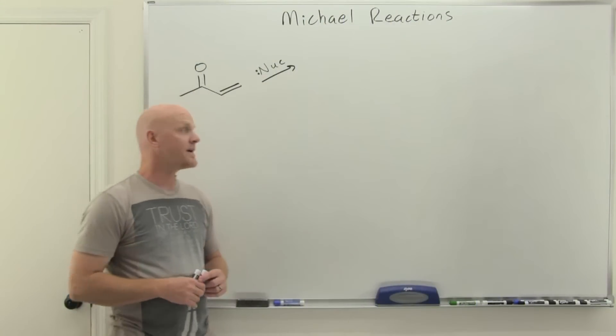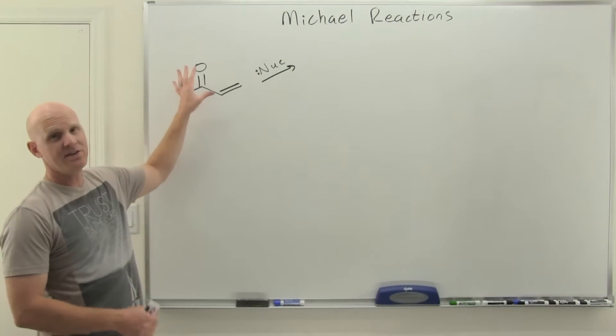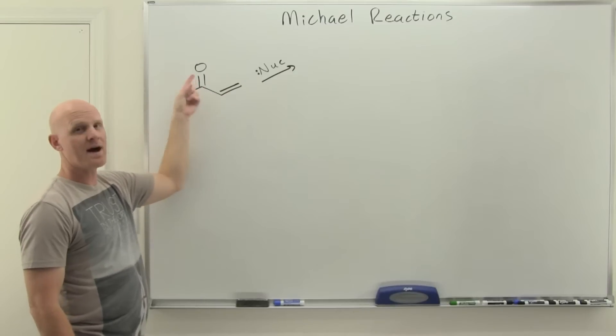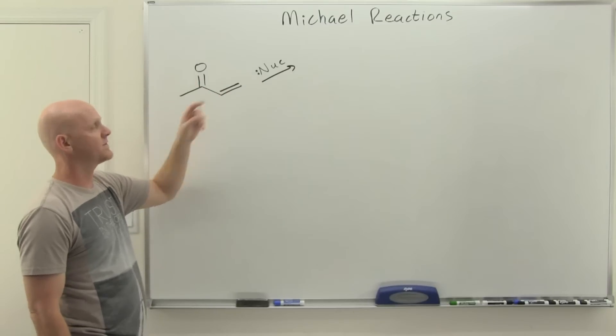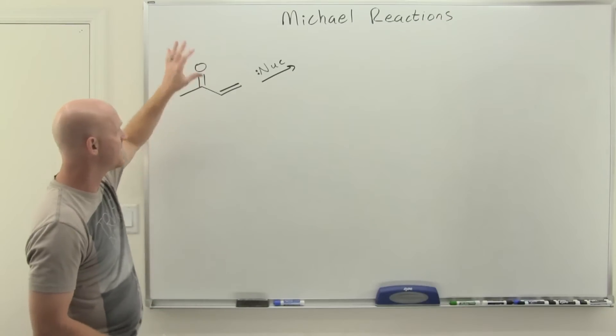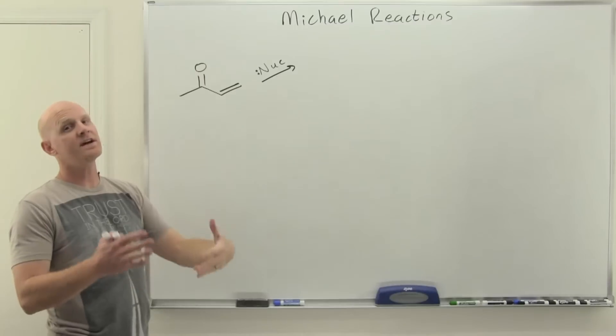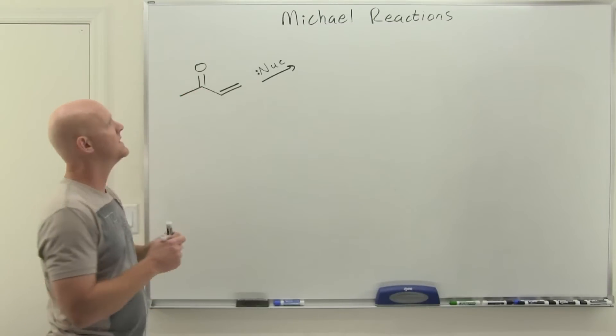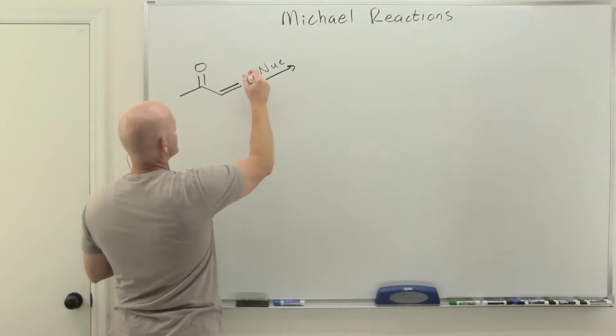Let's take a look at Michael reactions here and our conjugated ketone. Conjugated just simply means there's a single sigma bond in between the pi electrons of the ketone and the alkene here, so it's a single conjugated system with delocalization there.